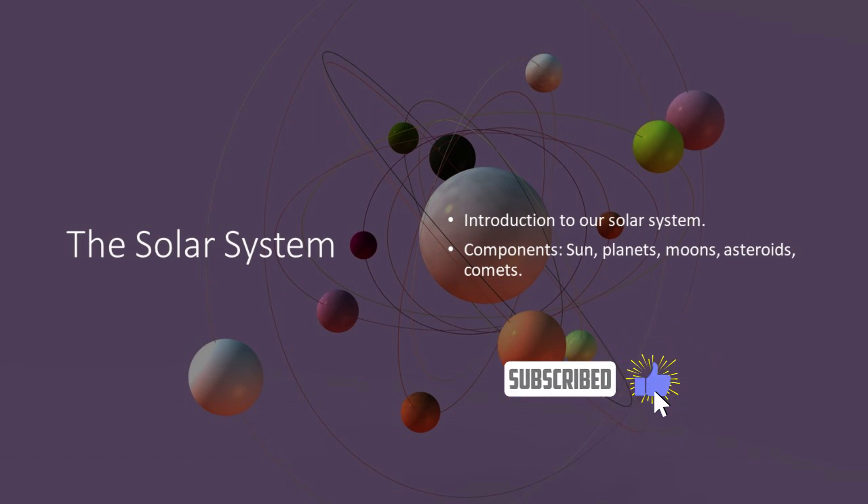At its heart, the Sun, a glowing orb of nuclear fusion, illuminates the darkness of space and provides the energy necessary for life on Earth. Planets, each unique in its composition and atmosphere, tell a story of cosmic evolution, where dust and gas coalesced to form these diverse worlds.